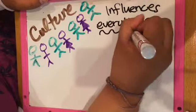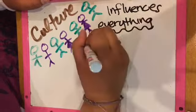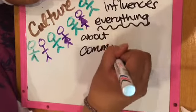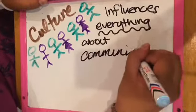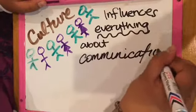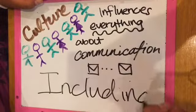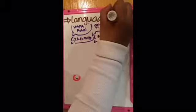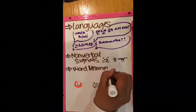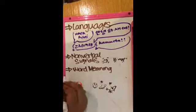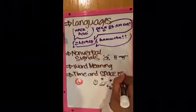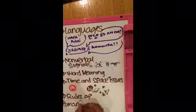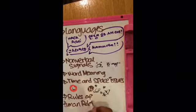Now let's talk about culture. Culture influences everything about communication. This includes five things: language, nonverbal signs, word meaning, time and space issues, and rules of human relationships.